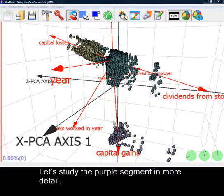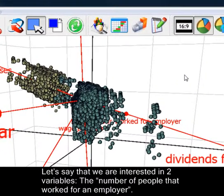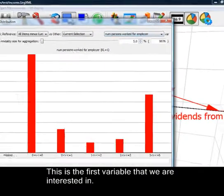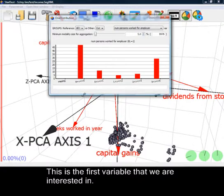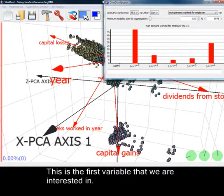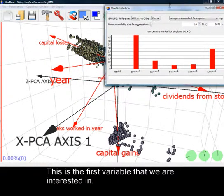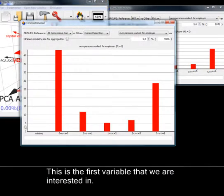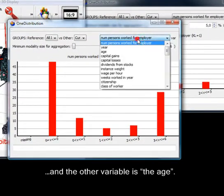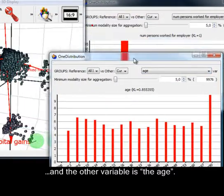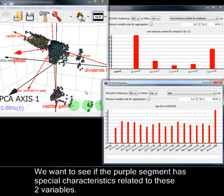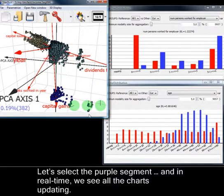Let's study the purple segment in more detail. Let's say that we are interested in two variables. The number of people that worked for an employer, this is the first variable that we are interested in. And the other variable is the age. We want to see if the purple segment has special characteristics related to these two variables. Let's select the purple segment. And, in real time, we see all the charts updating.